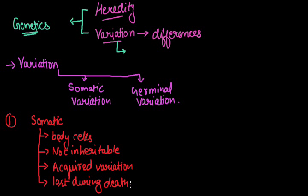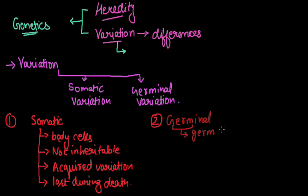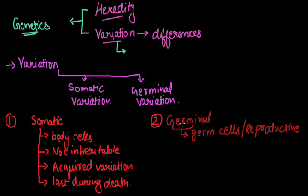Now let us discuss the differences between germinal and somatic variation. Germinal — this word consists of the word germ, that is the germ cells, or the reproductive cells. If there is any variation occurring in the germ cells or reproductive cells of the individual, then that character is inheritable from one generation to another. The germ cells are the reproductive cells — in case of males it is sperm, while in case of females it is ova.